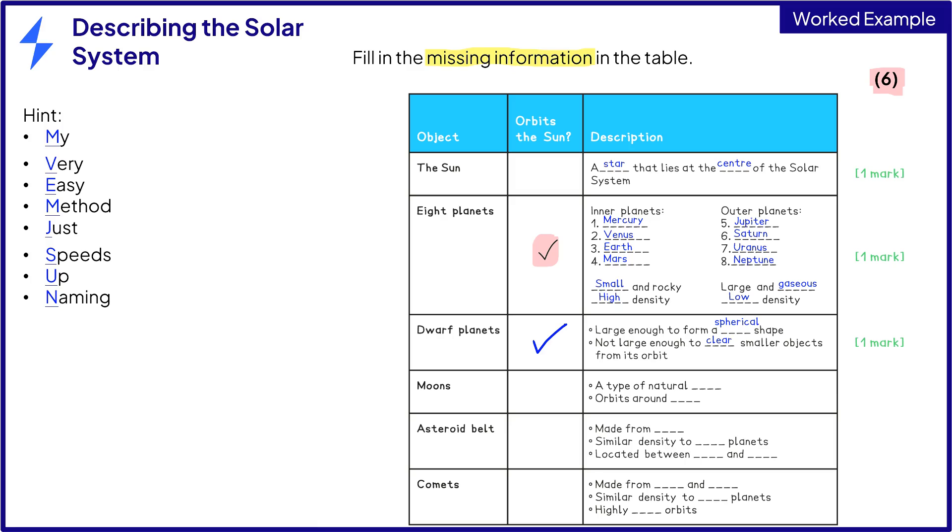Moons do not orbit the sun, as they are natural satellites, so they orbit around planets. The asteroid belt does orbit the sun. Asteroids are made from rock, so they have a similar density to the inner planets, and they are located between Mars and Jupiter.